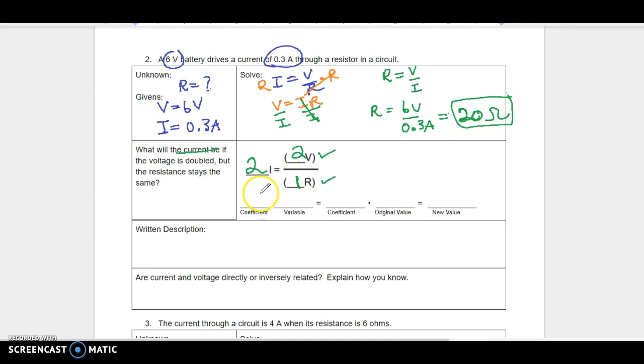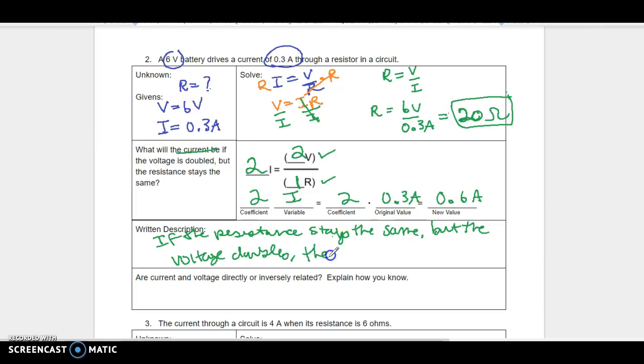Remember, we're trying not to say faster, because it's not faster. All right, so I'm looking for two times the current. Two times the original current was 0.3 amps, so my new current is going to be 0.6 amps. And the written description, if the resistance stays the same, but the voltage doubles, that means the battery's pushing twice as hard, then the current will double. Twice as many charges we'll be able to get through per second.